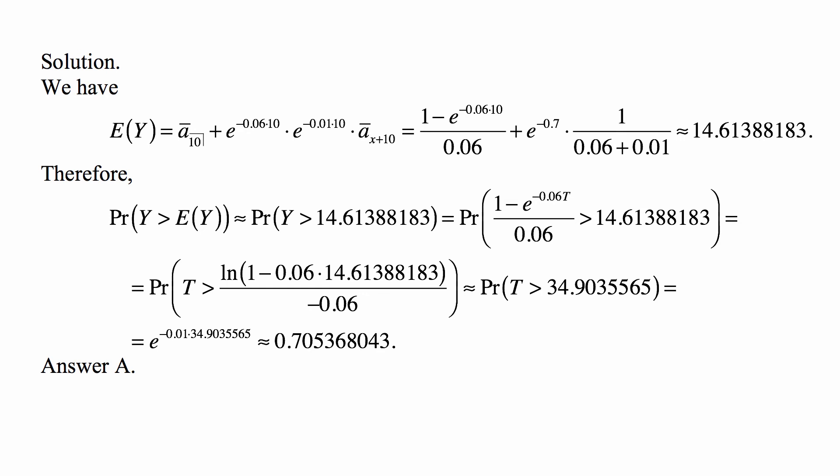That's the same as the probability that T is more than ln(1 - 0.06 × 14.61388183)/(-0.06). And we calculate that number, and it's approximately the probability that T is greater than 34.9035565.